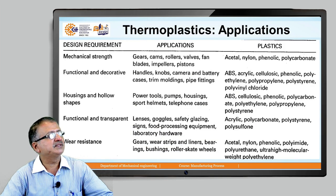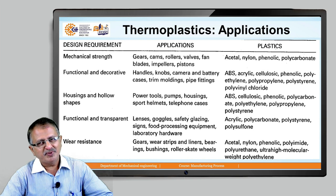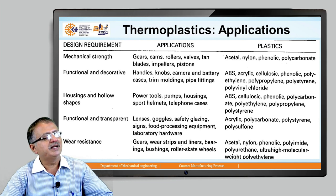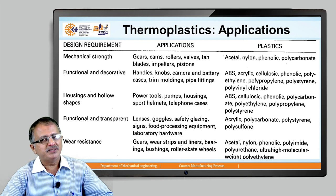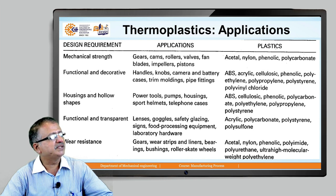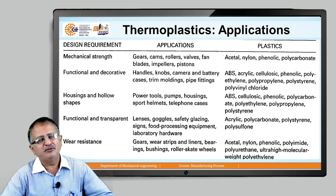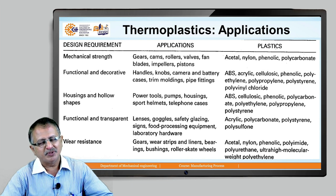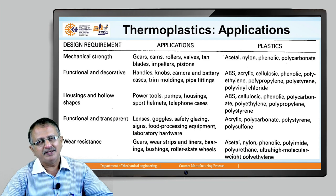To elaborate further on thermoplastic applications: a particular design requirement determines the material selection. If mechanical strength is the requirement, then plastics used include acetal, nylon, phenolic, and polycarbonates, with applications such as gears, cams, roller valves, fan blades, impellers, and pistons. There are different types of design requirements — mechanical strength, functional and decorative requirement, housing and hollow shapes, functional and transparent, and wear resistance. This slide illustrates the versatility of thermoplastic applications: as per the design requirement, the material availability conforms to that requirement and yields the desired application.